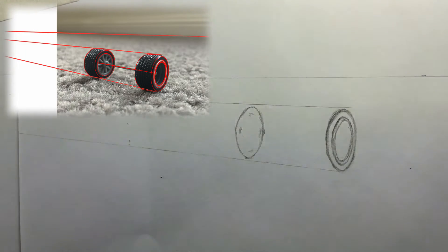Draw another ellipse inside this one, which will look a little bit more like a circle.